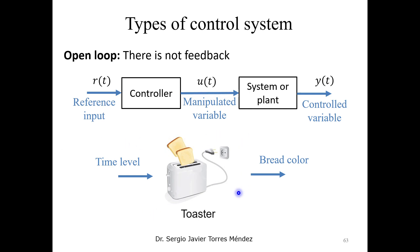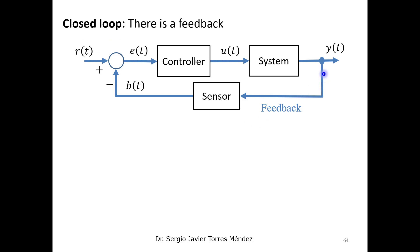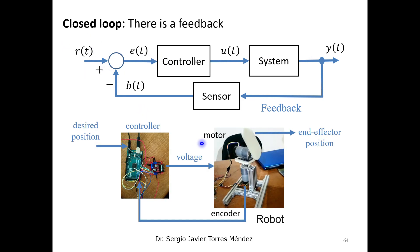In contrast, we have the closed-loop control system, where we need a feedback signal from the output in order to generate an error by comparing the reference input with the actual output value. The controller then uses this error to accomplish the reference input.